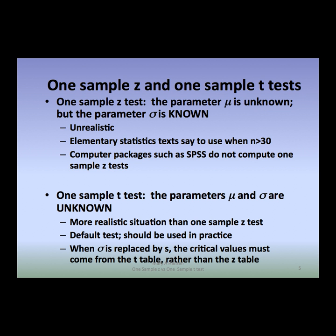For the One-Sample Z-Test, the parameter mu, the population mean, is unknown, but the parameter sigma, the population standard deviation, is known. However, this is an unrealistic situation. Normally, when we want to make an inference about a population mean, we collect a sample of data and compute the sample mean x-bar and the sample standard deviation. The Z-Test assumes we know the population parameter sigma, which is unrealistic in practice.